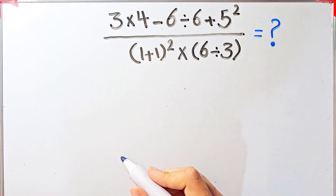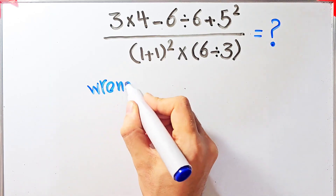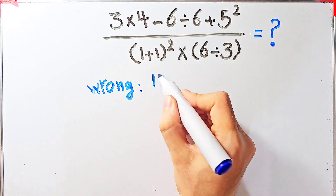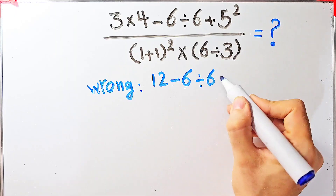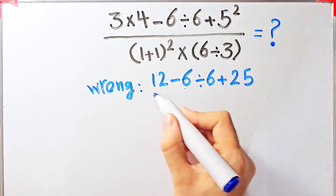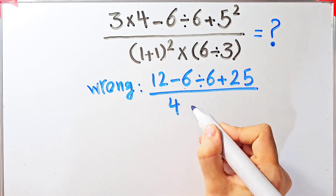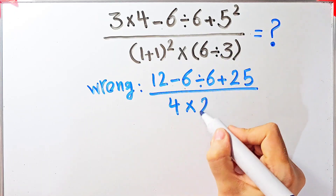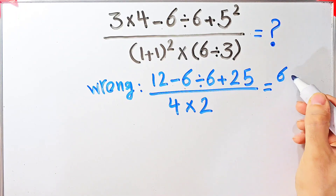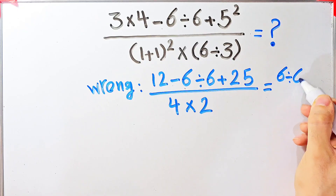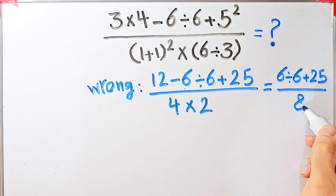Some people solve this question incorrectly. They say three times four equals twelve, twelve minus six divided by six, then plus five to the power of two which equals twenty-five, then divided by one plus one which equals two, then to the power of two which equals four, times six divided by three which equals two. So twelve minus six equals six, six divided by six, then plus twenty-five in the numerator, and in the denominator four times two equals eight.